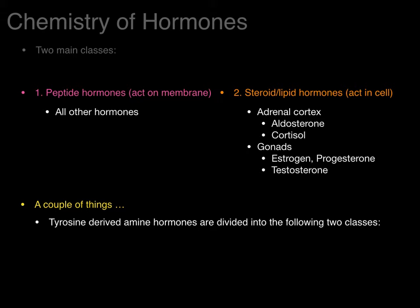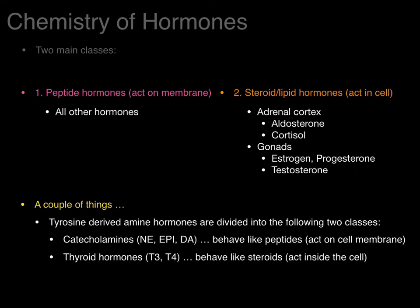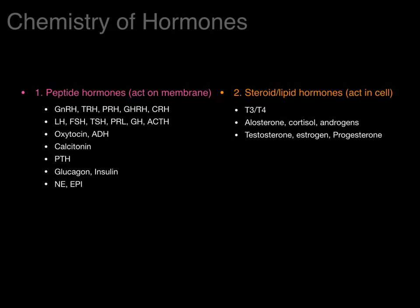There are always exceptions. Tyrosine-derived amine hormones are divided into two classes. Catecholamines — norepinephrine, epinephrine, dopamine — behave like peptides, meaning they bind to a protein receptor in the cell membrane and through second messengers like G proteins cause a cascade of events. Whereas thyroid hormones T3 and T4 behave like steroids, meaning they act inside the cell intracellularly. So on the left are peptide hormones acting on the cell membrane, including norepinephrine and epinephrine, and on the right are steroid hormones acting inside the cell, which includes T3 and T4.